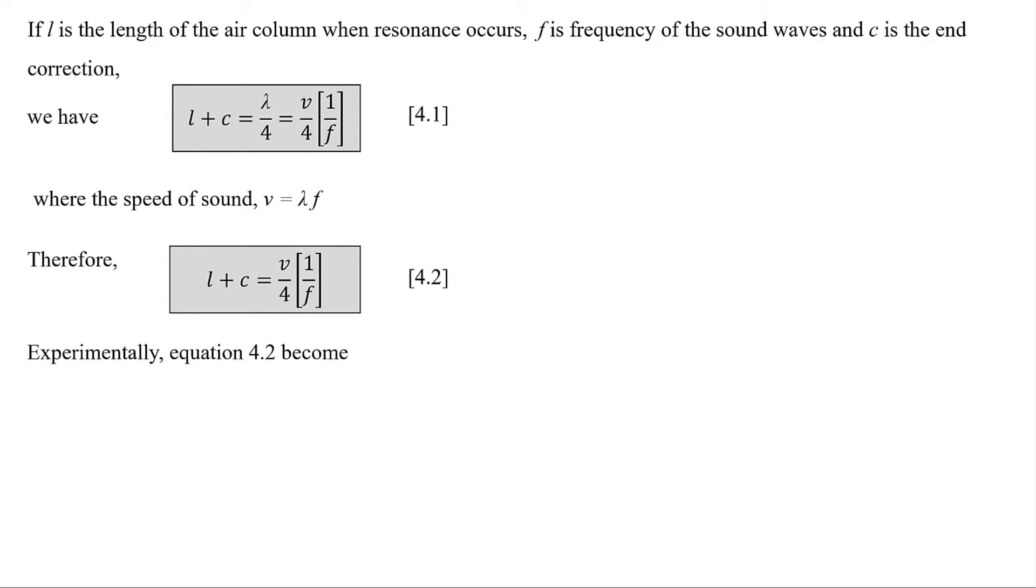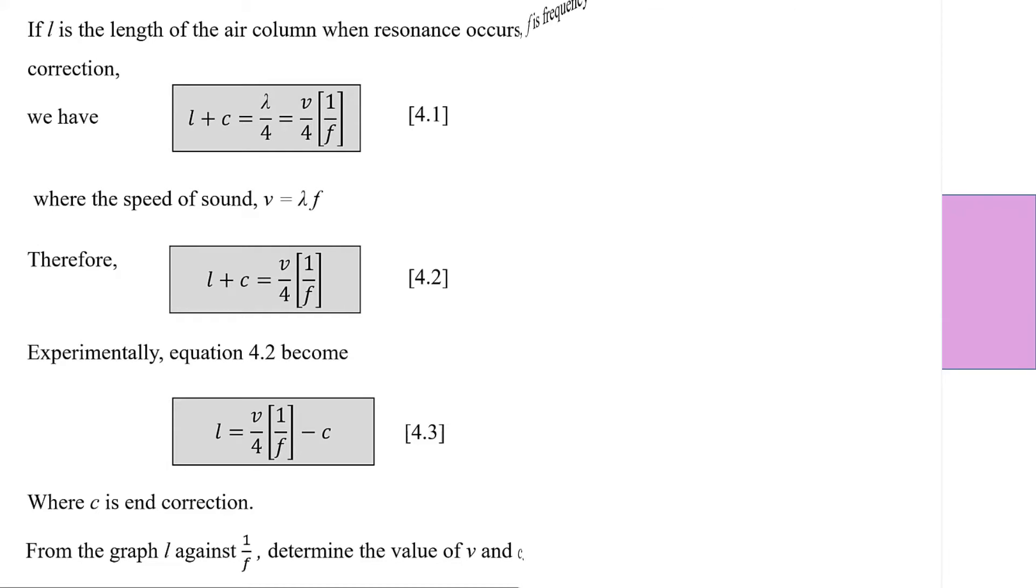Experimentally, equation 4.2 becomes L equals to V over 4 times 1 over F minus C as equation 4.3, where C is the end correction. From the graph of L against 1 over F, determine the value of V and C.